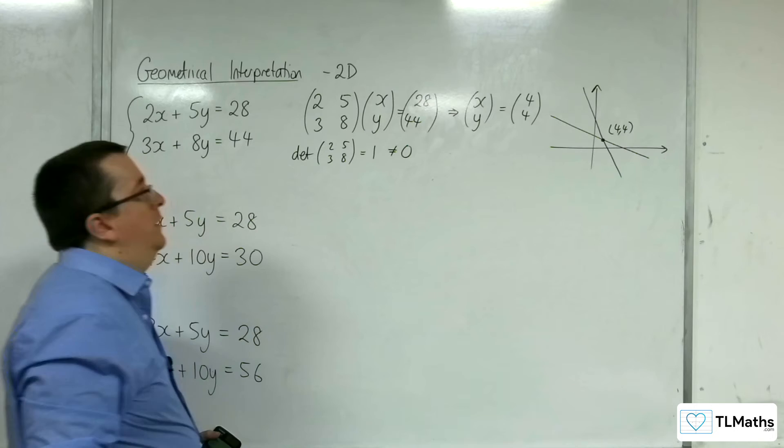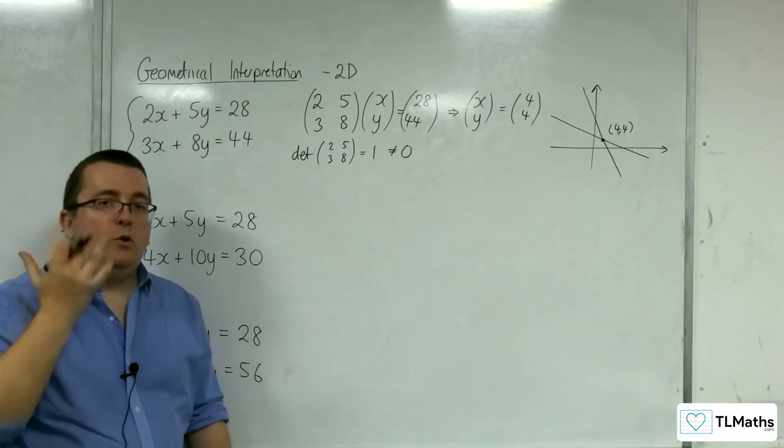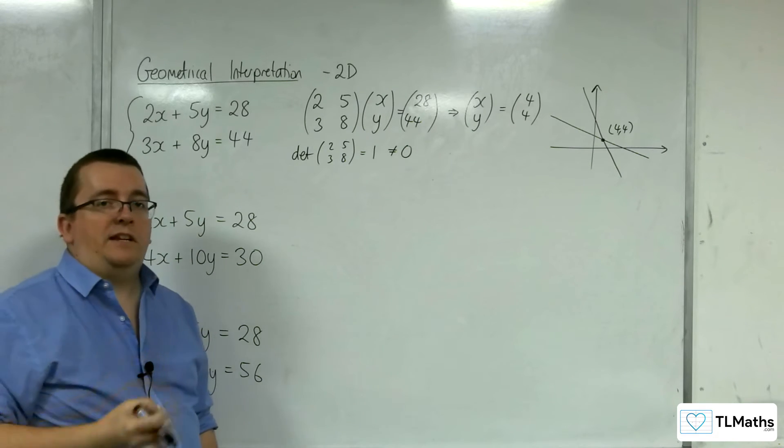So it's equal to 1. It's non-zero. So because it's non-zero, you're going to get these two lines intersecting at a distinct point.